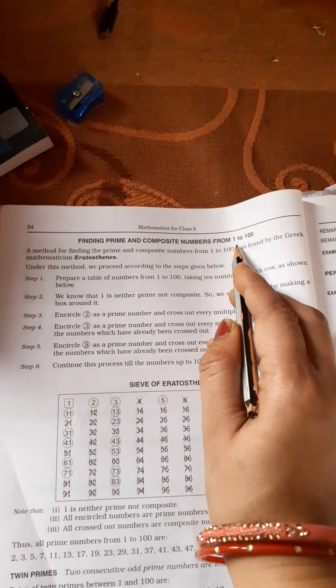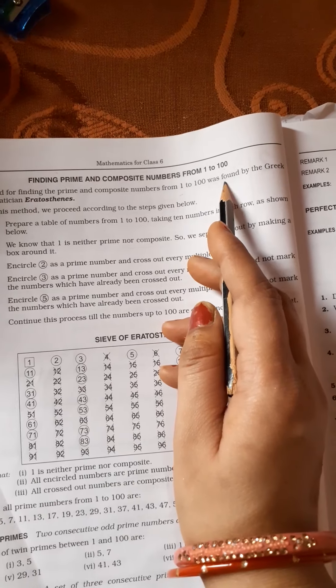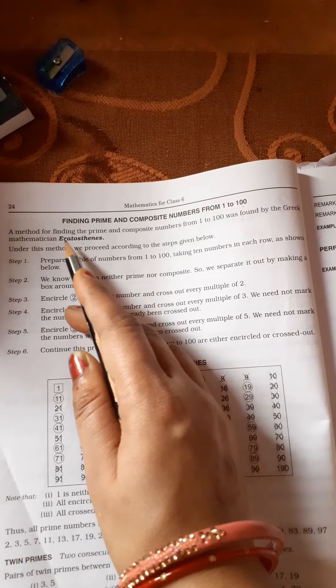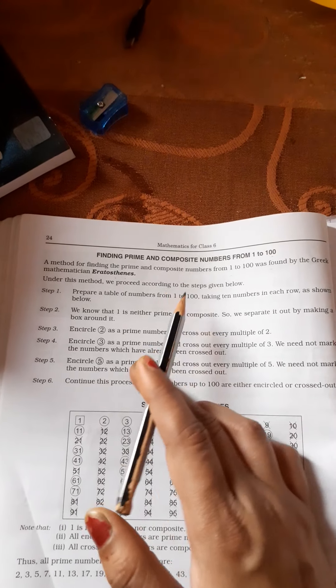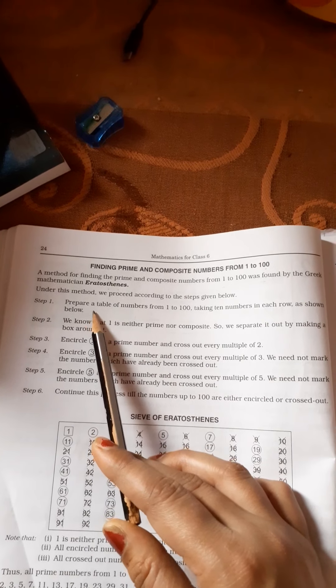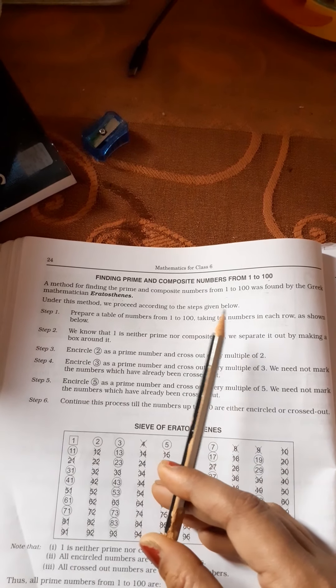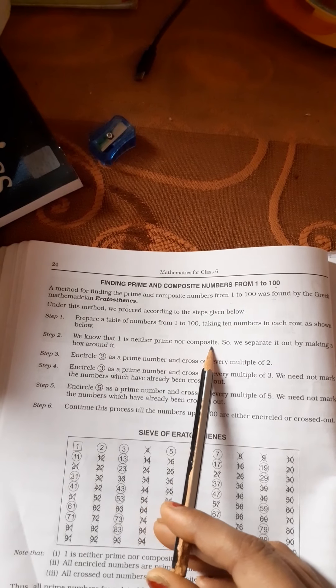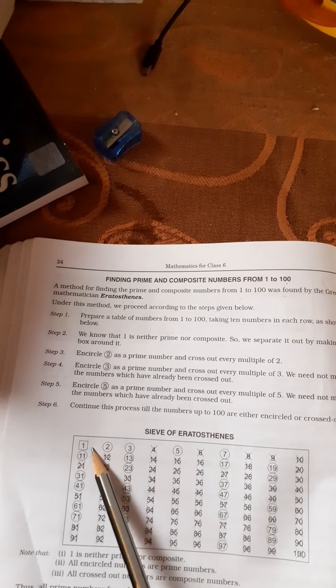Finding prime and composite numbers from 1 to 100. A method of finding the prime and composite numbers from 1 to 100 was found by Greek mathematician Eratosthenes. Under this method, we follow these steps: prepare a table of numbers from 1 to 100, taking 10 numbers in each row. Arrange numbers from 1 to 10 in each row to make a table. We know that 1 is neither prime nor composite, so we separate it out by making a box around it.